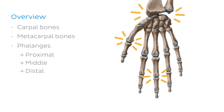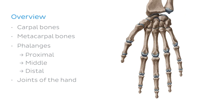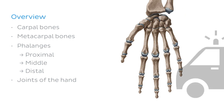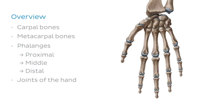We'll then look between these various bones to name some important articulations that are found in the hand. At the end of the video, we'll use what we learned and apply it to a relevant clinical scenario that relates to the bones of the hand.